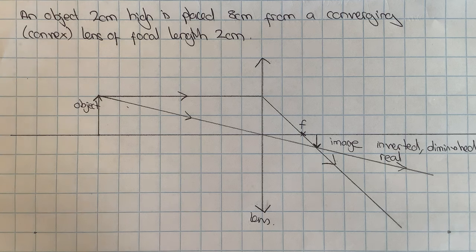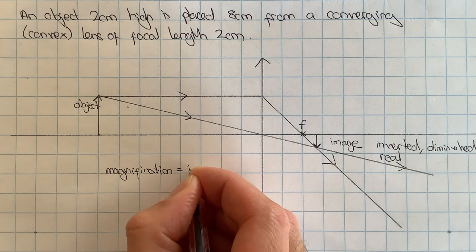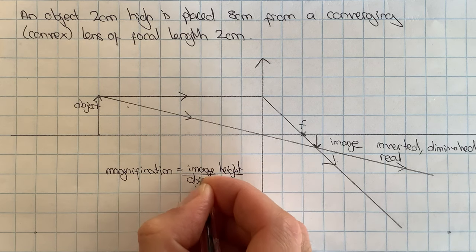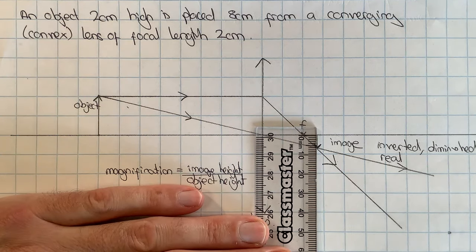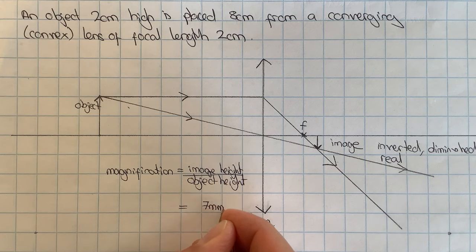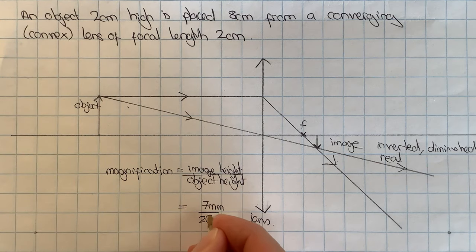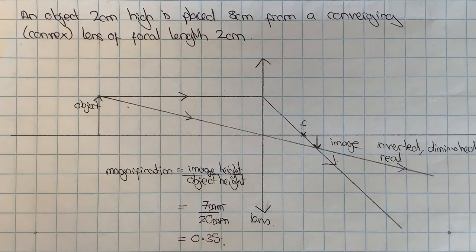I can also calculate the magnification. To do that I need to do the image height divided by the object height. So I can get my ruler out and measure. My image height is about 7 millimeters. So I'd have 7 millimeters, and my object height was 20 millimeters. As long as those units top and bottom are the same, they will cancel out, which will leave me my magnification as 0.35, with no units.